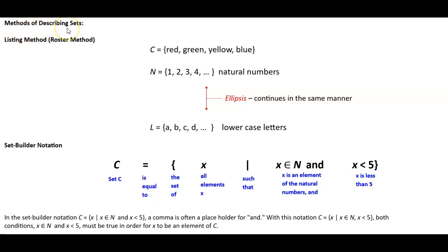Now, methods of describing sets. We have a listing method or roster method. For example, we have a set C. We have our braces: red, green, yellow, blue.